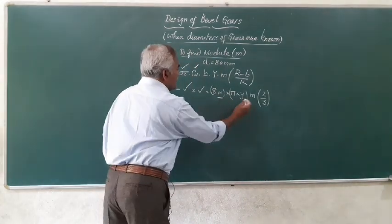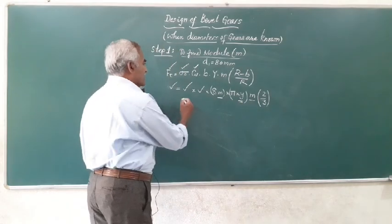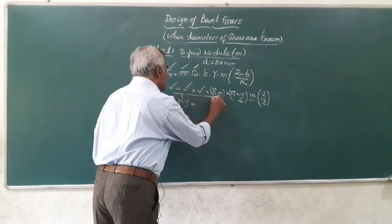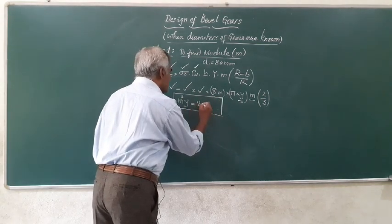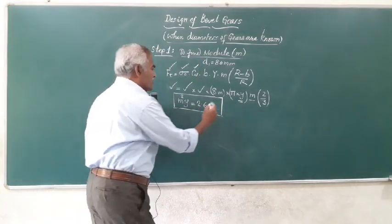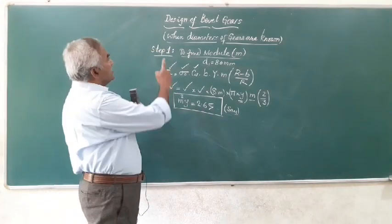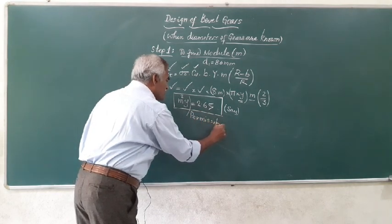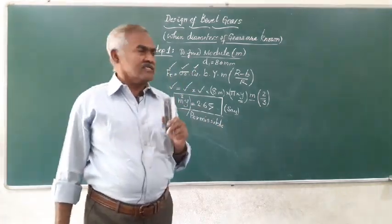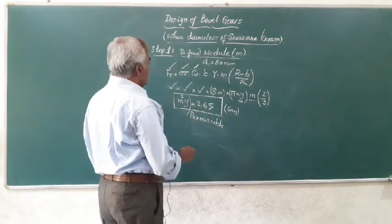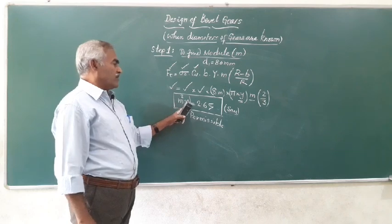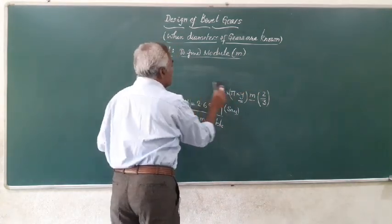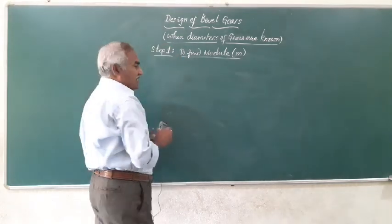After all substitutions — Ft known, sigma naught known, Cv calculated, B = 8m, Y = π × y, module M, and (R − B)/R = 2/3 — the equation reduces to the form M² × Y = some known definite value, say 2.65. This is the permissible value we need to match.